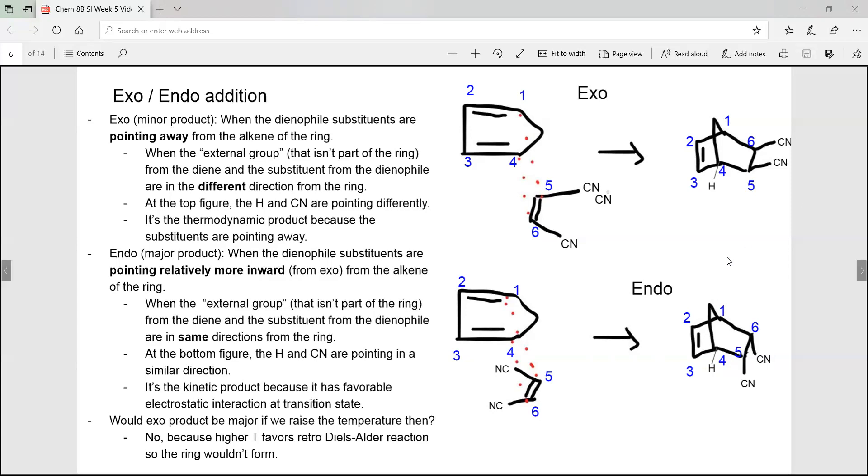When the dienophile substituents are pointing relatively more inward from the alkene of the ring then it is endo. Similar to earlier, another way to look at it is if the external group from the diene and the dienophile substituents are pointing the same way. If they are, then they're endo.